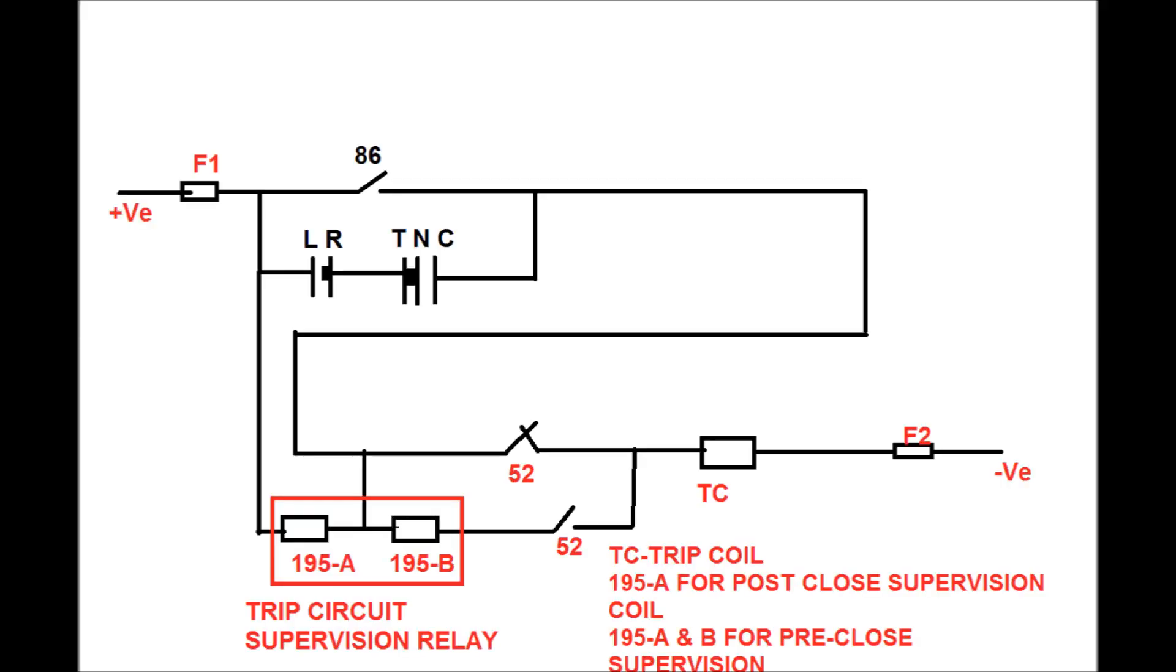Now the trip operation of the circuit breaker. The circuit diagram are shown in this figure. In this figure we see the 195A and 195B are the trip circuit supervision relay.